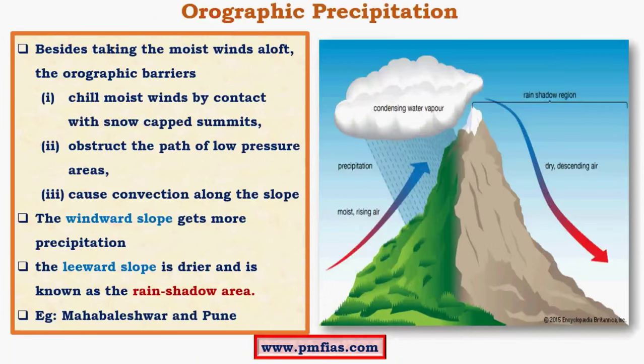We have now covered convectional rainfall. The chief example for convectional rainfall is thunderstorm formation, and in thunderstorms we have downdraft, updraft, downburst, tornadoes, waterspouts, lightning, and thunder — all these concepts fall under convectional rainfall.